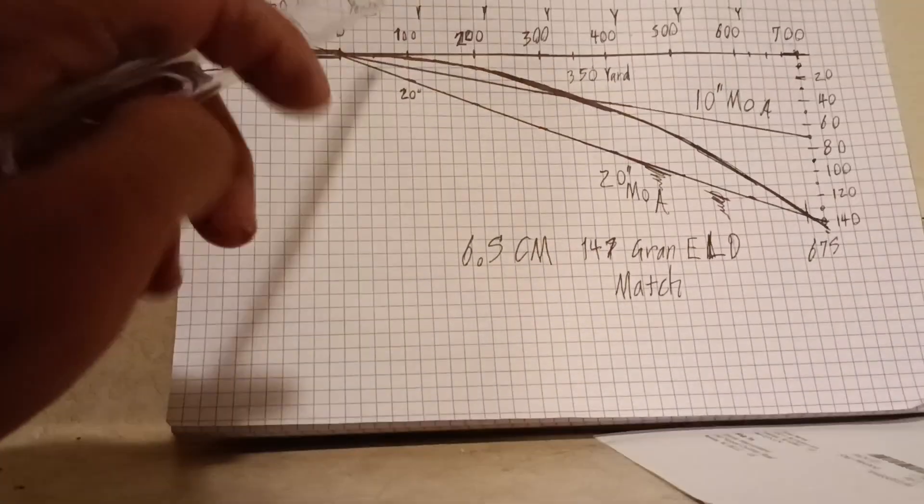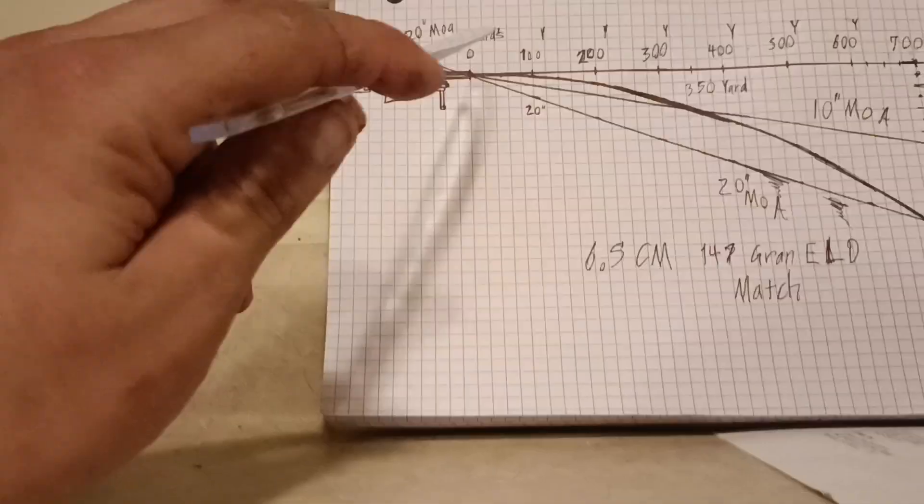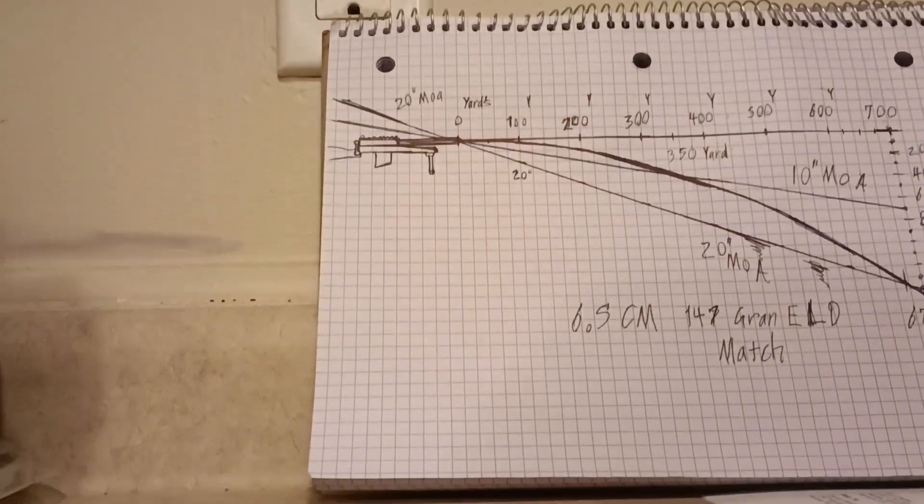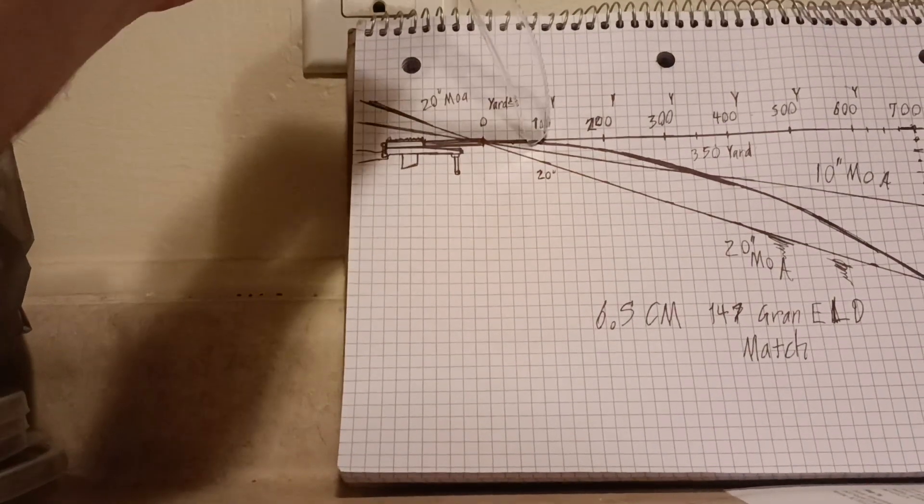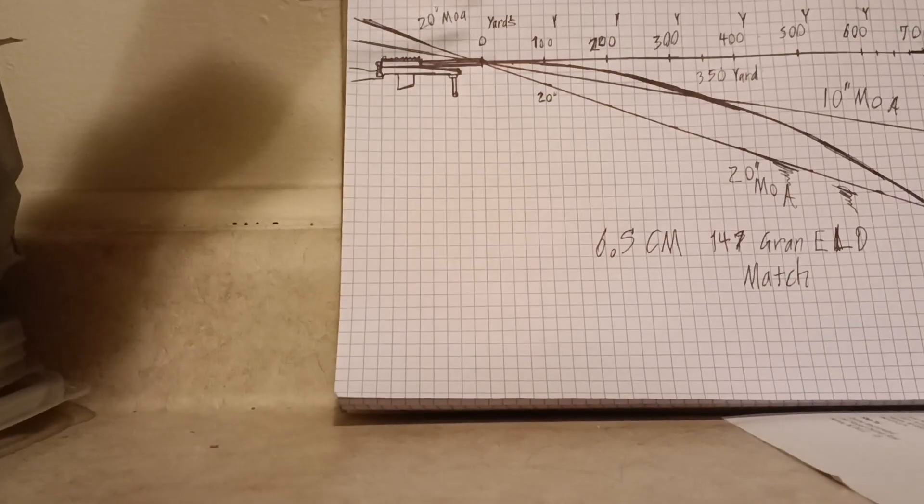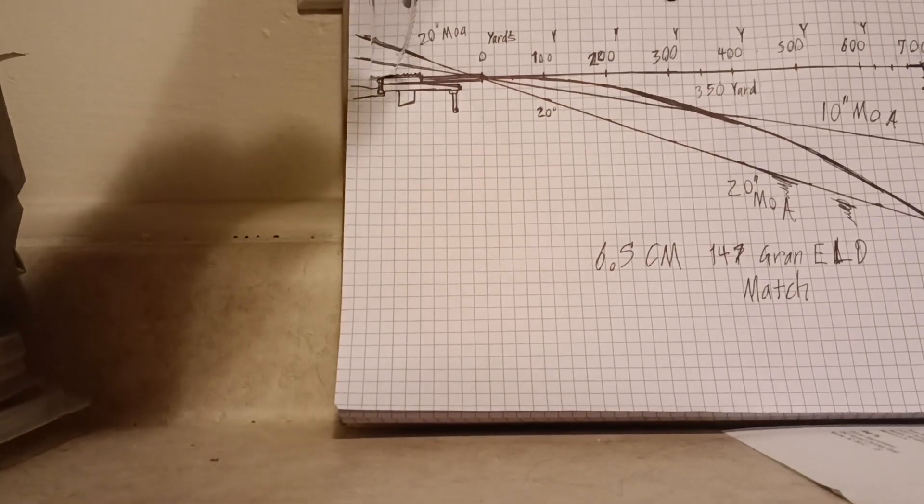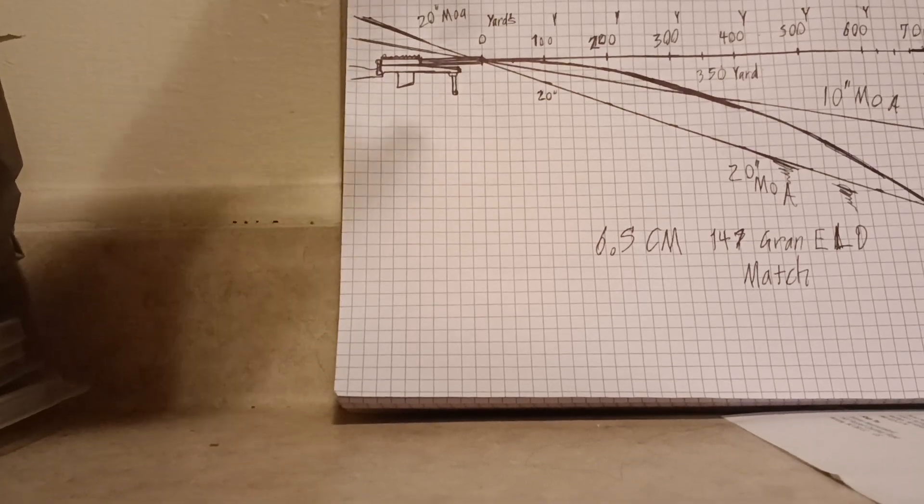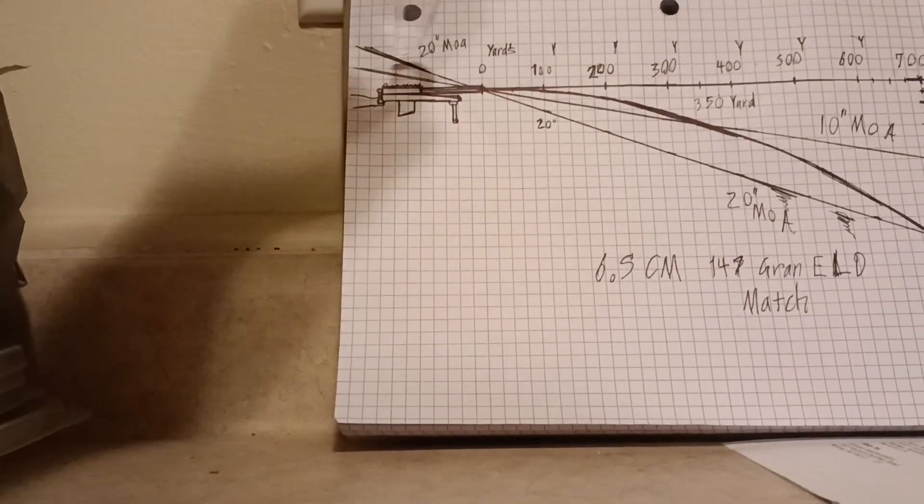The main thing to take away is that 6.5 Creedmoor at 100 yards has 2 inches of drop. On a bolt gun or AR-15 it will vary a bit, but you'll have roughly 2 inches of height over bore, which is the center of your scope to the center of your bore.